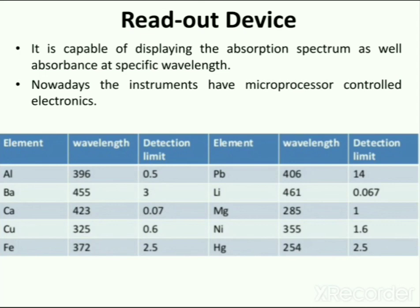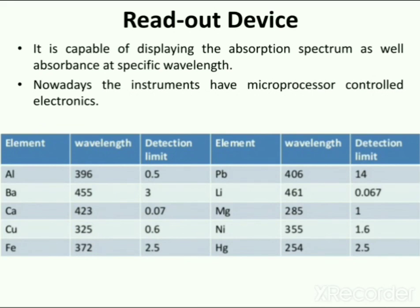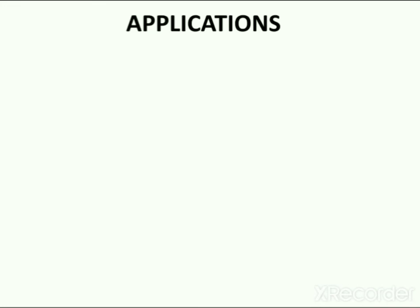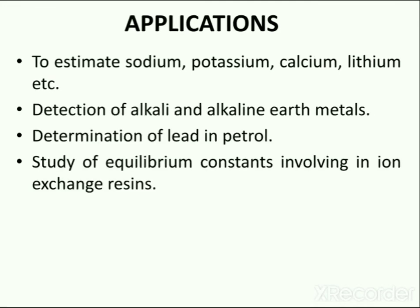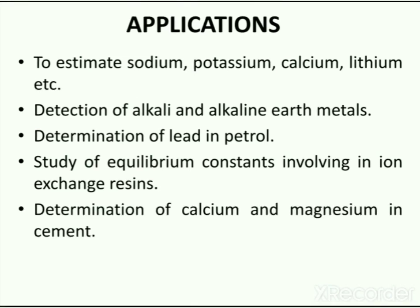A table includes several elements, their characteristic emission wavelengths, and their detection limits, which are very important in the detection of those elements. Flame photometry is used for the estimation of elements such as sodium, potassium, calcium, and lithium in samples of serum, urine, CSF, and other body fluids. It is also useful for the determination of alkali and alkaline earth metals, used in determination of lead in petrol and coal, used in the study of equilibrium constants involving ion exchange resins, and used for the determination of calcium and magnesium in cement.